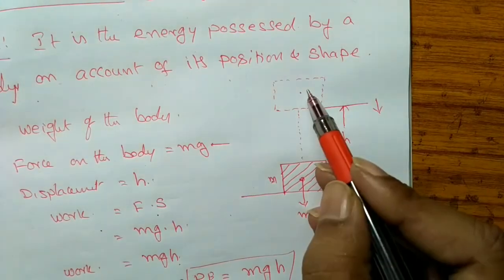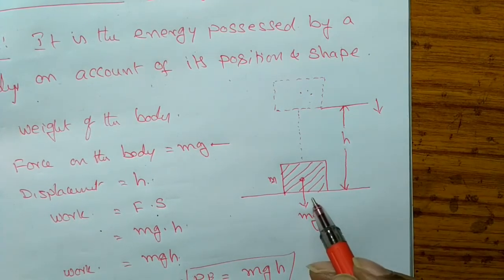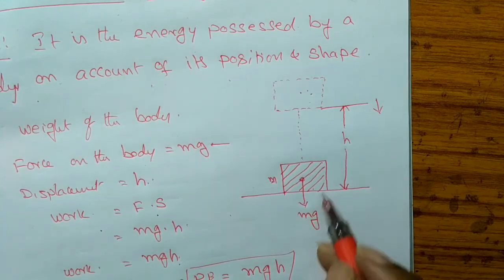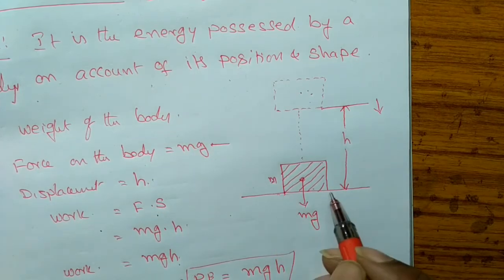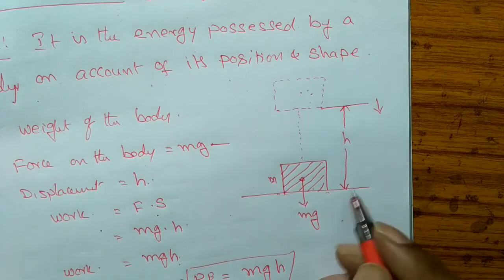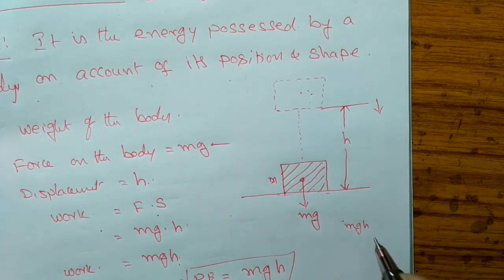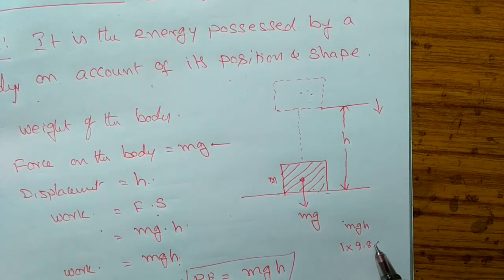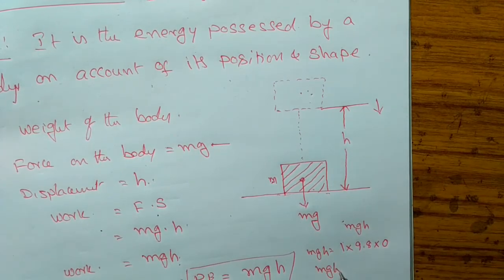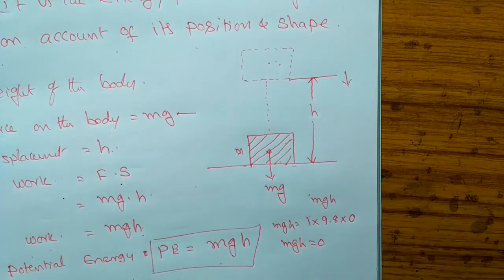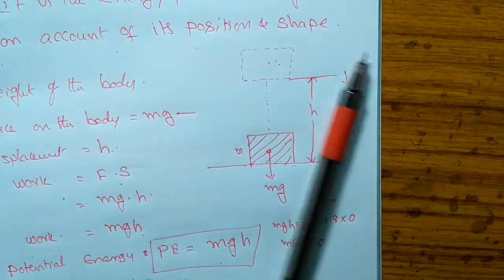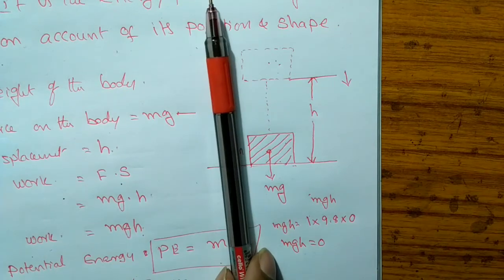Suppose an object has mass m equals 1 kg, g equals 9.8, and height h equals 0 — the body is on the ground surface. Then potential energy equals m times g times h equals 1 kg into 9.8 into 0, which equals 0. So when the body is on the ground, potential energy is zero.